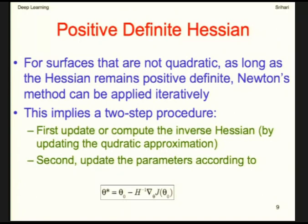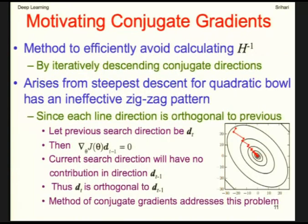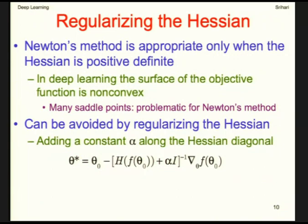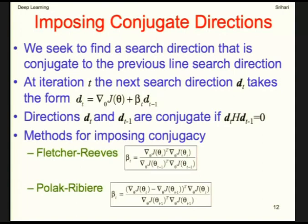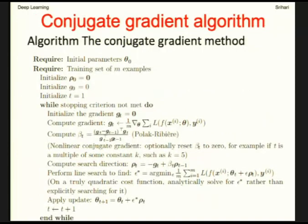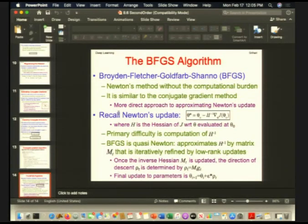As long as the Hessian remains positive definite, Newton's method can be applied iteratively: first update the inverse Hessian, then update the parameters. There are issues around regularizing the Hessian. The conjugate gradient method avoids directly computing the inverse Hessian by proceeding step by step in conjugate (orthogonal) directions. The BFGS algorithm is another second-order method.